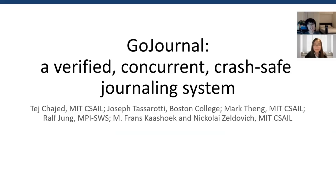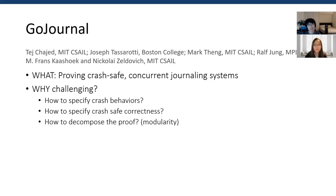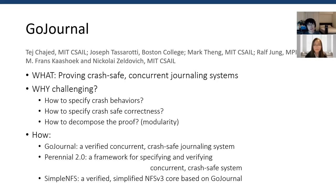Our next paper is GoJournal: a Verified Concurrent Crash-Safe Journaling System, from MIT, Boston College, and MPI. The paper is about proving a crash-safe concurrent journaling system. Proving such a system is challenging — for example, we need to specify the behavior of such complex systems mathematically, including crash behaviors and crash-safe correctness. Moreover, modularity is needed in the proof due to the system's complexity. This paper introduces the implementation and verification of a journaling system, along with a framework to deal with these challenges. A simplified and verified NFSv3 core is built with GoJournal to confirm its usability in practice.